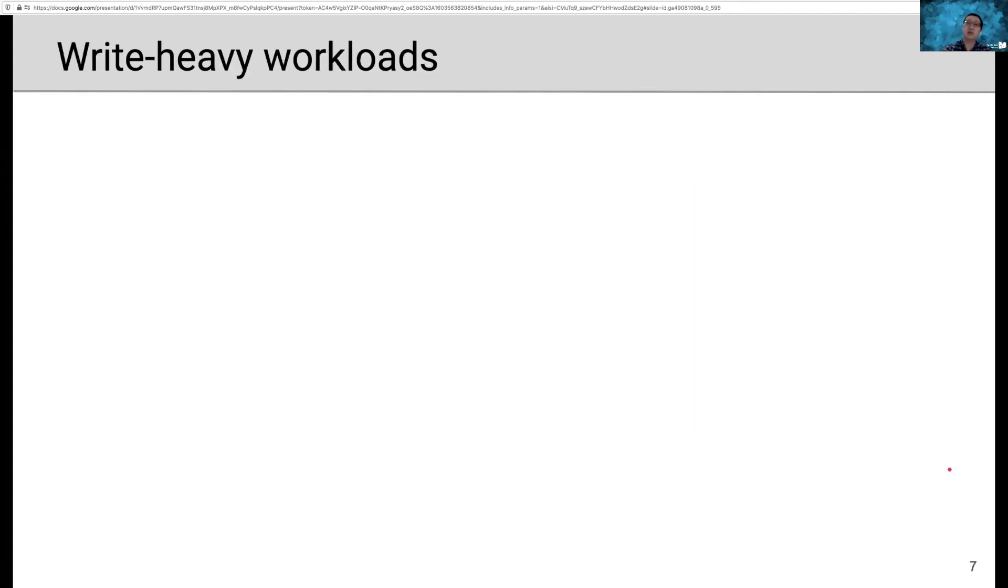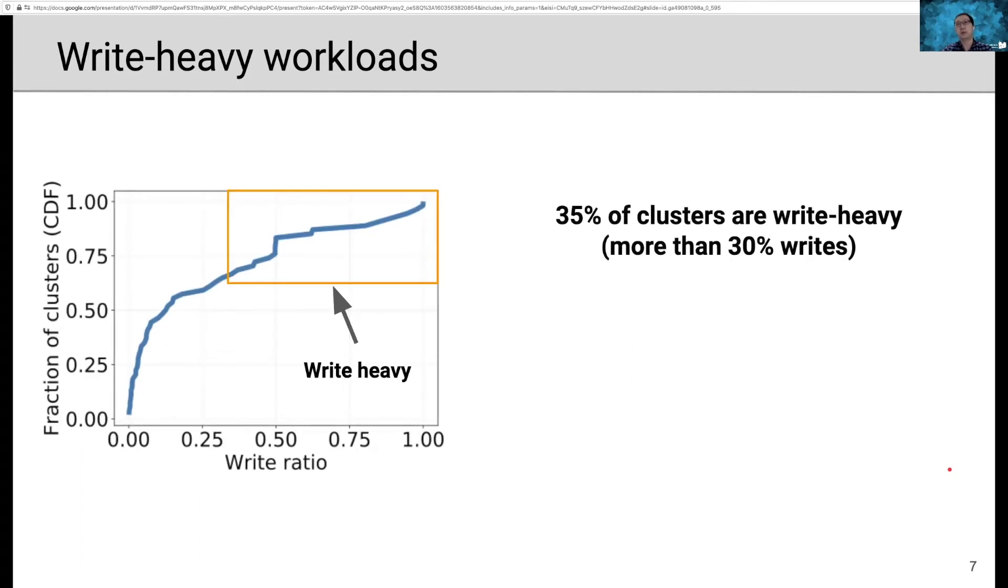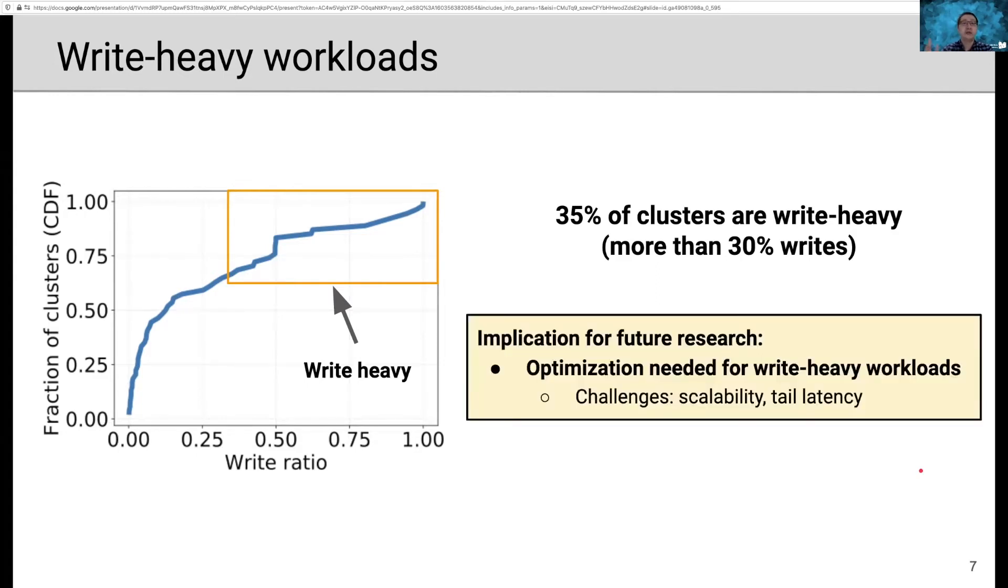Now let's dive deep into the workloads or the traces. The first observation we have is write-heavy workloads. Most previous work assumed in-memory cache serve read-heavy workloads. It is true that at Twitter, read-heavy workloads are the majority of the workloads. However, we observe that around 35% of clusters are actually write-heavy. By write-heavy, I mean it has more than 30% of writes. So what does this mean for future research? We believe that future research should also optimize for write-heavy workloads. Because write-heavy workloads pose more challenges because they are harder to scale to multiple cores because of evictions and expirations. And write-heavy workloads have longer tail latencies in production.